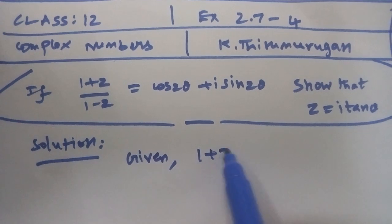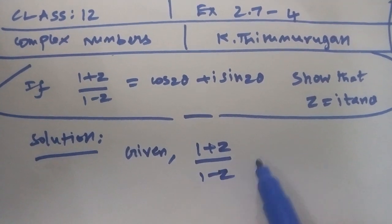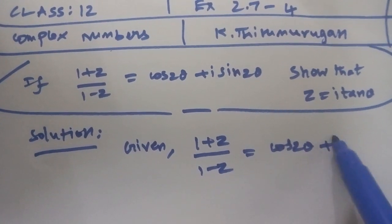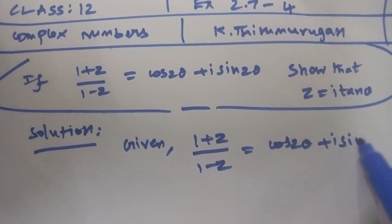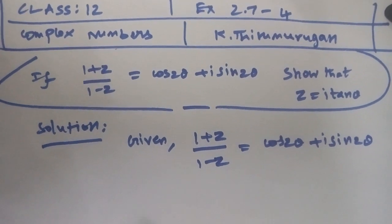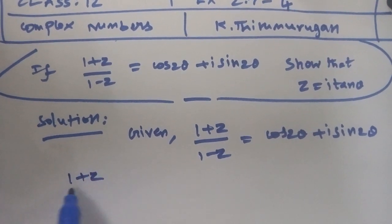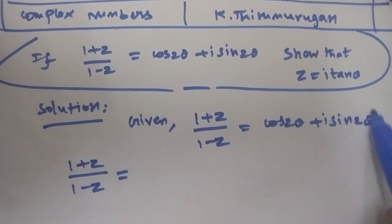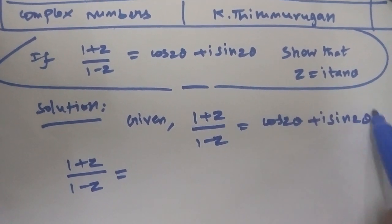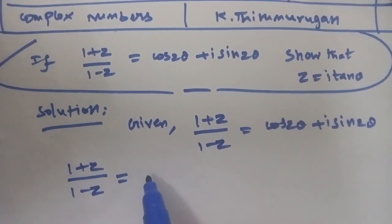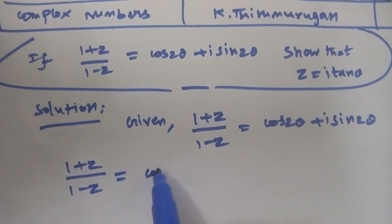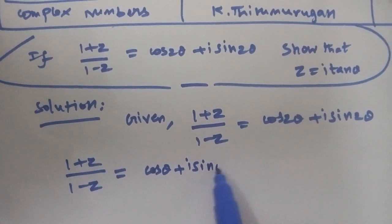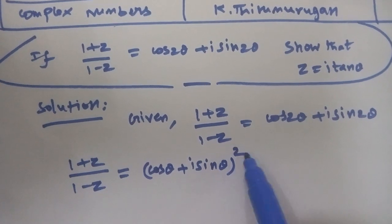Starting with (1 + z) / (1 − z) = cos 2θ + i·sin 2θ, we can write this as (cos θ + i·sin θ)².